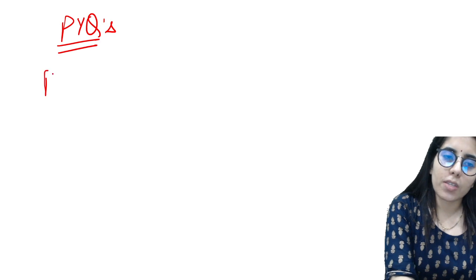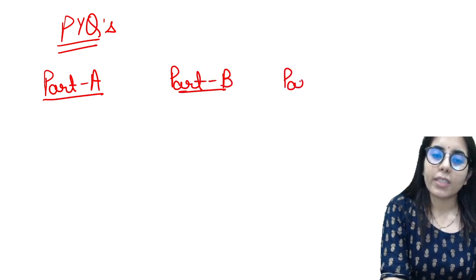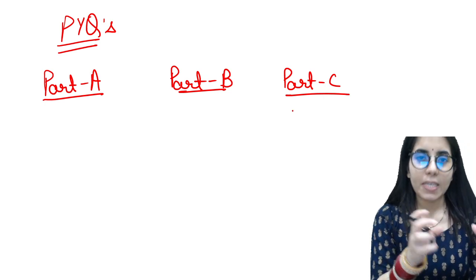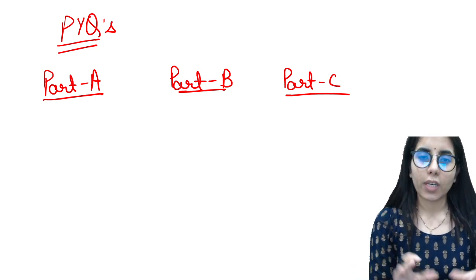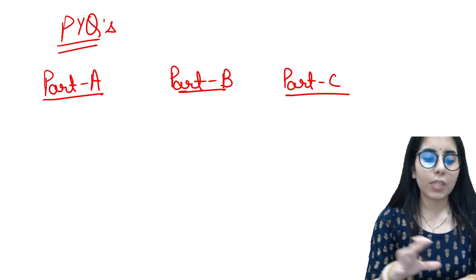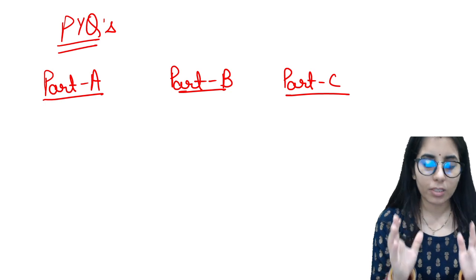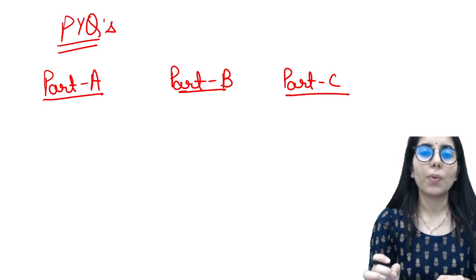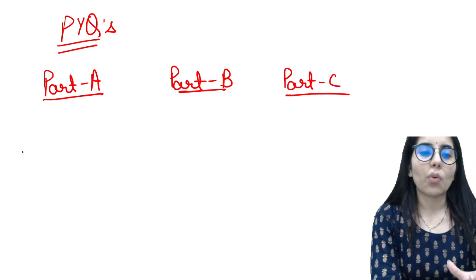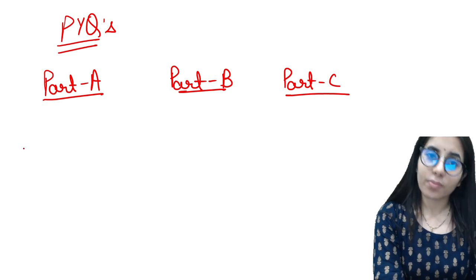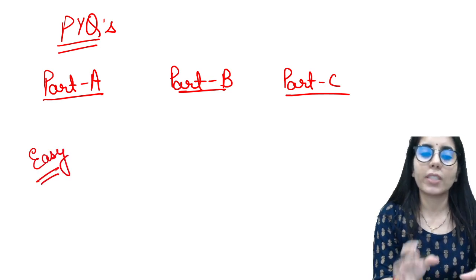Talking about the separate sections — Part A, Part B, and Part C. In Part A, we had mostly easy questions. Around 10–12 questions were quite easy. If you focused even a little on the question statement and the relevant concept, it was straightforward to work through them. Overall, Part A was an easy section this time, or at most moderate for those who struggled with several questions.